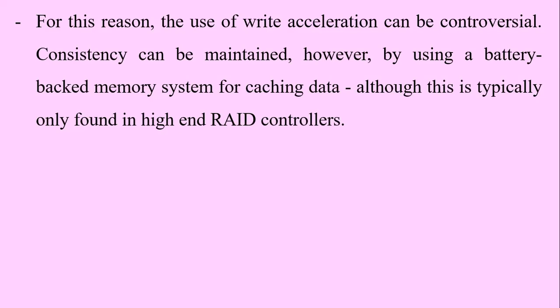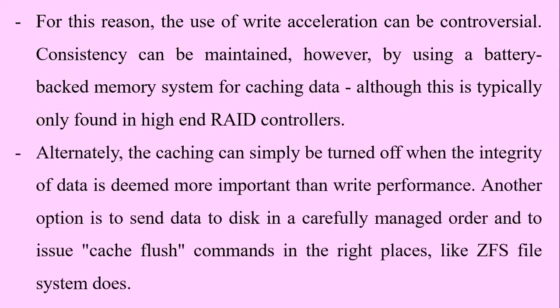Consistency can be maintained, however, by using a battery-backed memory system for caching data, although this is typically only found in high-end RAID controllers. Alternatively, caching can simply be turned off when the integrity of data is deemed more important than write performance. Another option is to send data to the disk in a carefully managed order and to issue cache flush commands in the right places, as the ZFS file system does.